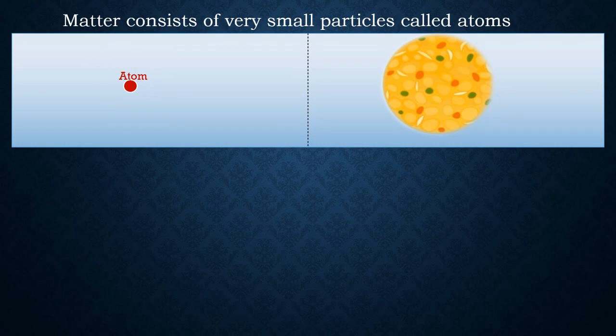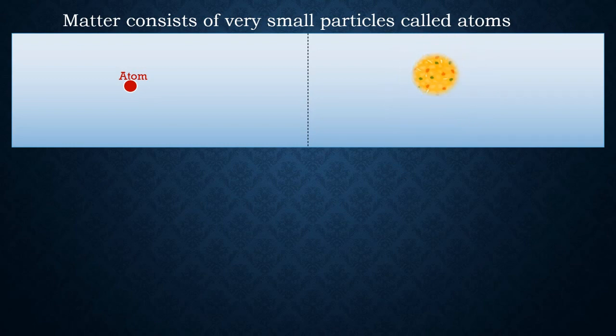Similarly, consider the sweet called bundi laddu. If we go on dividing this laddu, at the end we will be left with a small part called bundi, and further division of this bundi is not possible. This illustrates the first postulate. Now let us study the second postulate.